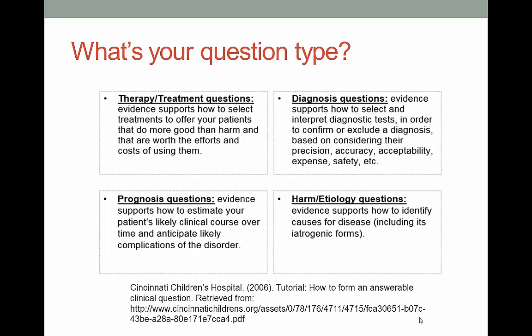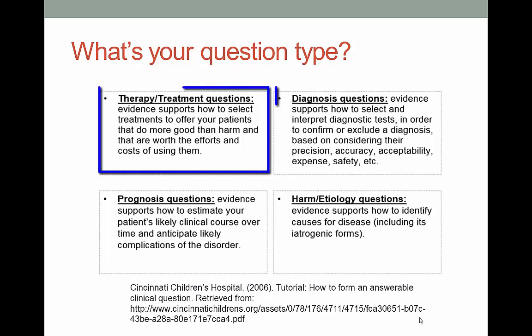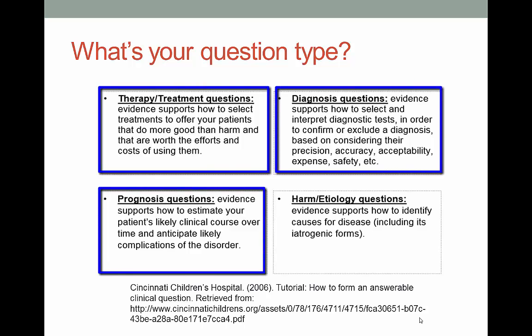We're not quite ready to jump into the searching yet — I promise we'll get there soon. Remember this little table from the first step of the evidence-based practice process? We want to figure out what our question type is so we know the best sort of study that will help us. These are the four biggies: therapy or treatment, diagnosis, prognosis, and harm.